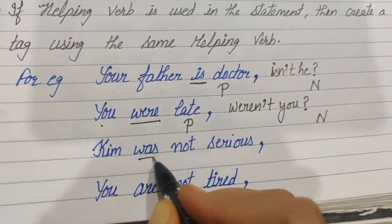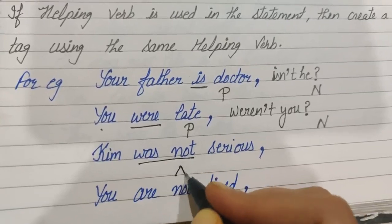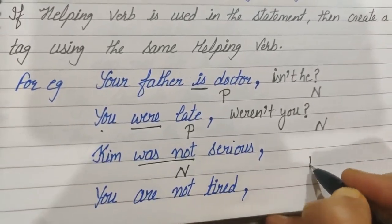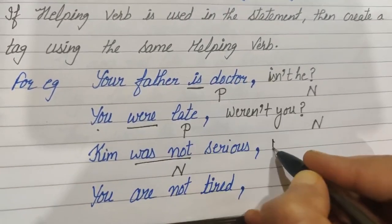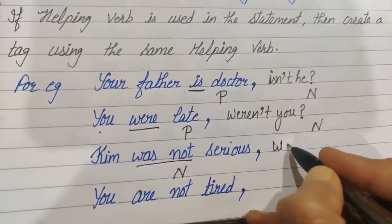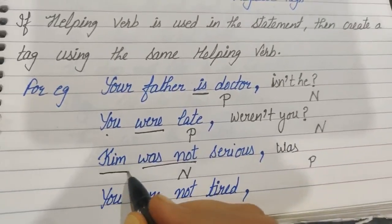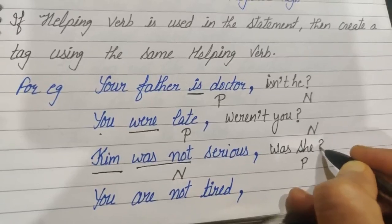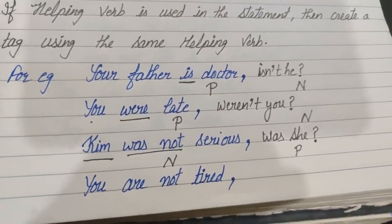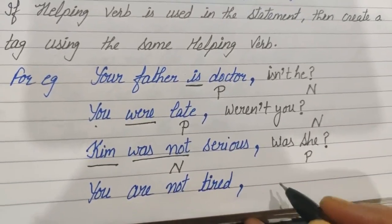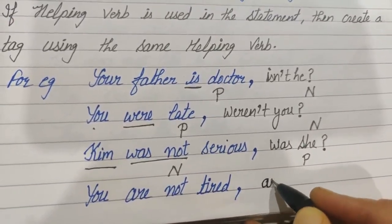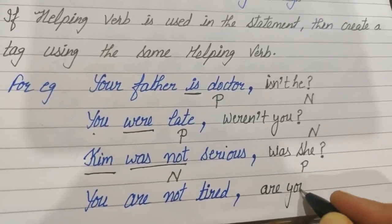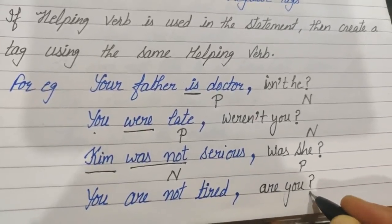'Kim was not serious.' Now it's a negative statement, so the tag must be positive. What is the helping verb? 'Was.' And for Kim, we use 'she.' So the answer becomes: was she? Next: 'You are not tired.' Helping verb is 'are,' and the pronoun is 'you.' So the answer becomes: are you?